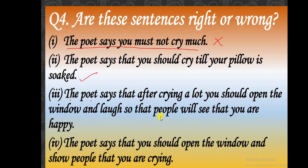Third sentence: 'The poet says that after crying a lot you should open the window and laugh so that people will see that you are happy' — this is correct, because the poet says after crying a lot you should open the windows and let people see that you are now happy. Fourth sentence: 'The poet says you should open the window and show people that you are crying' — this is wrong. So out of four sentences, sentences two and three are correct, and sentences one and four are wrong.